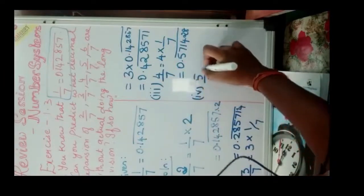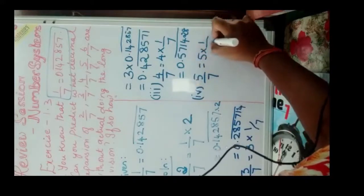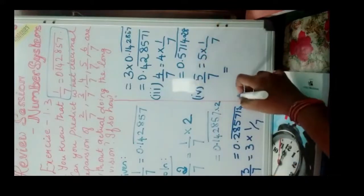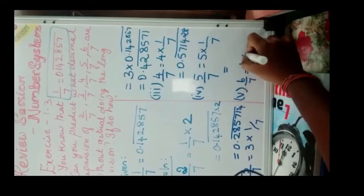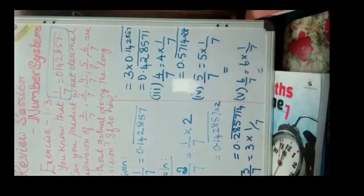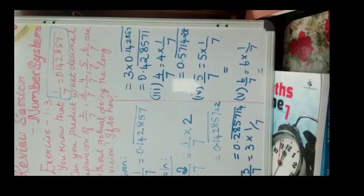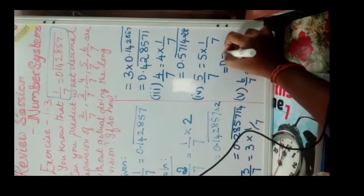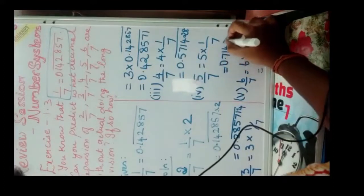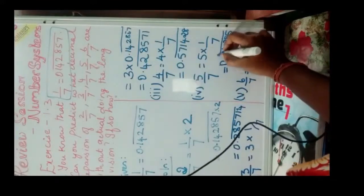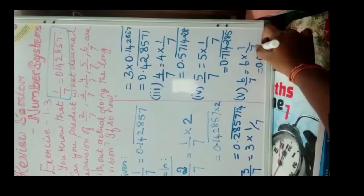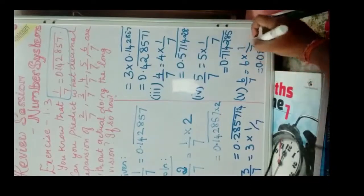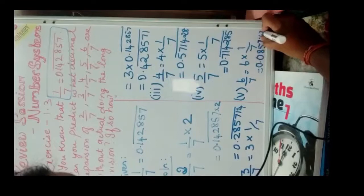For 5 by 7, which is 5 into 1 by 7, the answer is 0.714285 bar. And for 6 by 7, which is 6 into 1 by 7, the answer is 0.857142 bar.